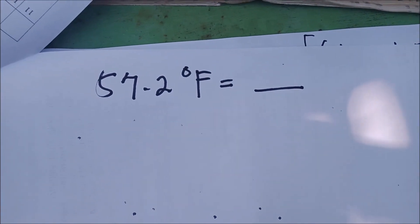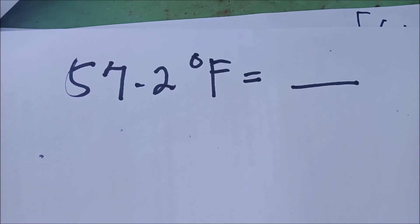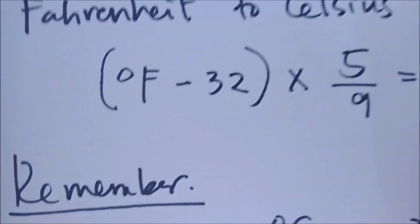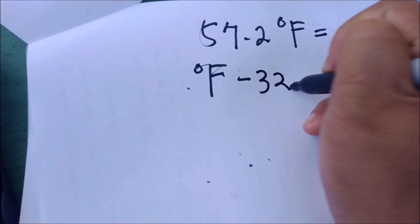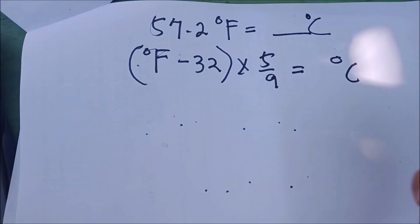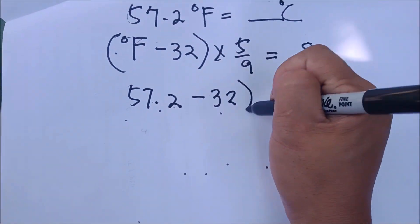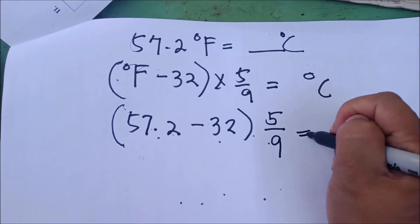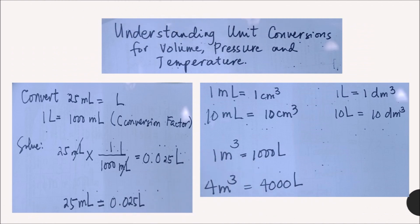To verify: convert 57.2 degrees Fahrenheit back to Celsius using the formula (°F − 32) × (5/9). Substituting: (57.2 − 32) × (5/9). After subtracting you get 25.2, then multiplying by 5/9 gives 14 degrees Celsius — confirming the answer. You may check that in your calculator.